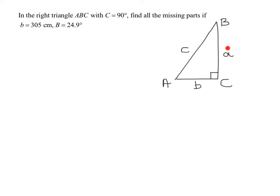So the side opposite angle A is side A, the side opposite angle B is side B, the side opposite angle C is side C. So now we've labeled it correctly. Let's put the information we have on here.